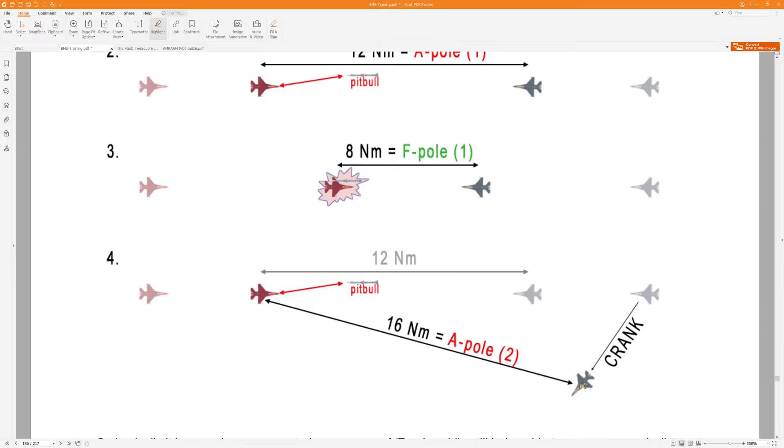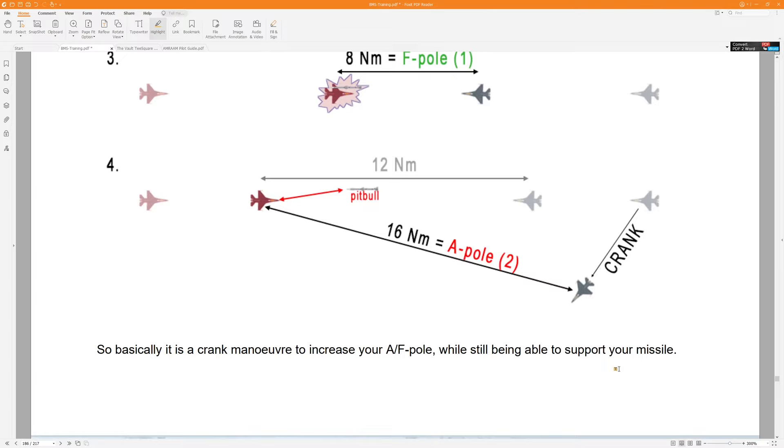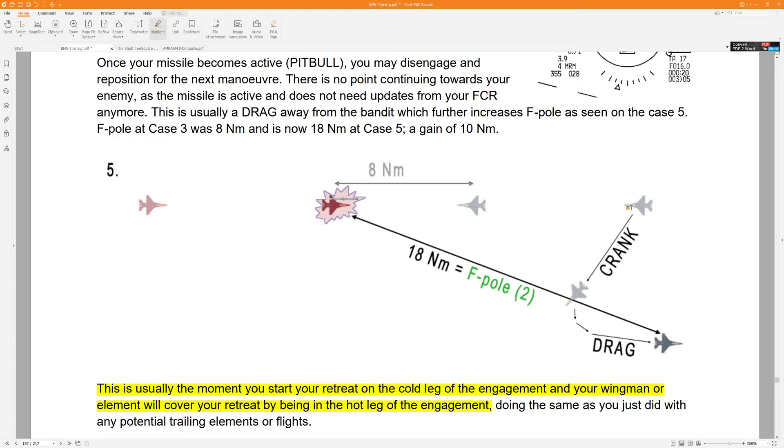So here we can see the crank maneuver. The aircraft has fired, cranked, is over here. The missile has gone pit bull, meaning that it's supporting itself. It's taking care of its own stuff now with its own radar. It is no longer helped at all by us being pointed at all in this direction, so we're free to turn cold.